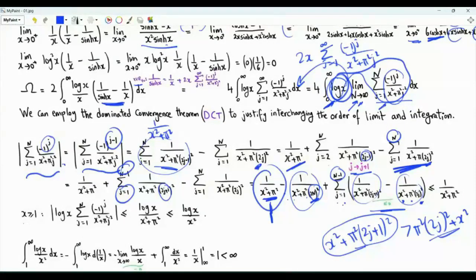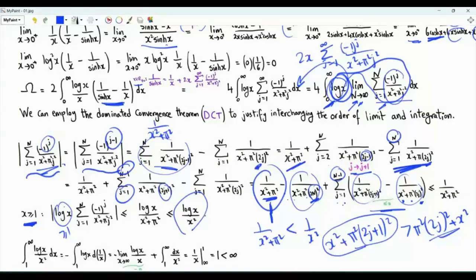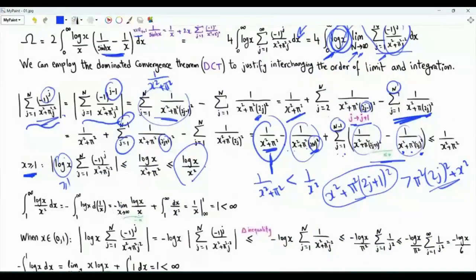We have log x in the integrand. If x is greater than or equal to one, then log x is non-negative, and the magnitude of the sum multiplied by log x is less than log x divided by x squared plus pi squared, which is less than log x over x squared. When x is greater than one, we can upper bound the integrand by log x divided by x squared. Doing integration by parts confirms this function is integrable from one to infinity, giving a finite number.